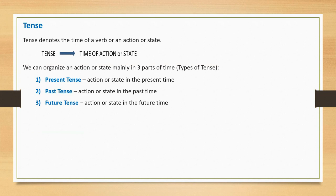Action or state in the present time is considered present tense. Action or state in the past time is known as past tense. Similarly, action or state in the future comes under future tense.